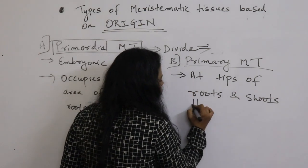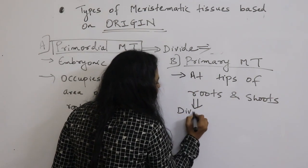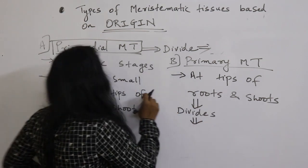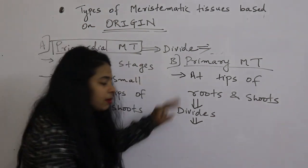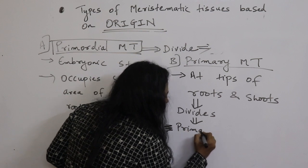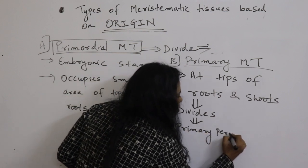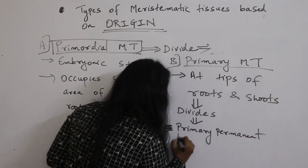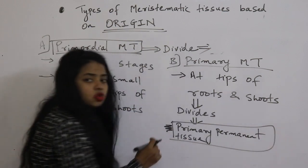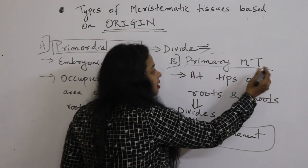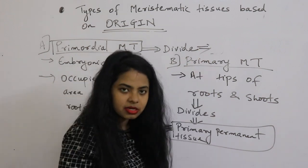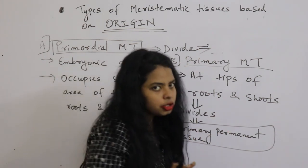Now this primary meristematic tissue divides to form the next stage. So first is primordial, second is primary, but in between there is something formed — that is primary permanent tissue. In between primary and secondary meristematic tissue there is primary permanent tissue.